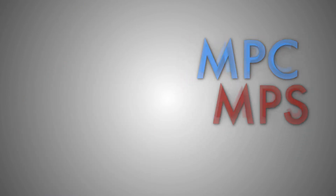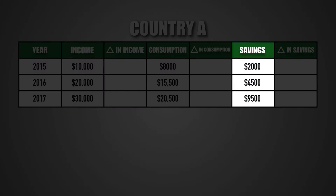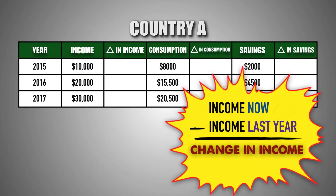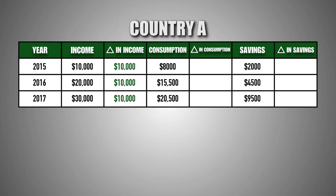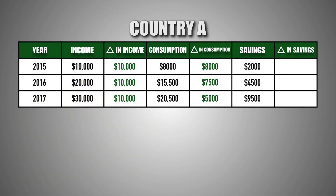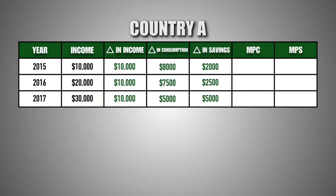This table illustrates the consumption and savings data for Country A between 2015 and 2017. We can see the disposable income levels of consumers in each year, as well as the amount spent on goods and services and the amount saved. First, we determine the change in disposable income by subtracting the previous year's level from the current year. Next, we calculate the difference in consumption as disposable income changed. Lastly, we calculate the difference in savings. Now we're ready to calculate the MPC and MPS for 2015, 2016, and 2017, discovering exactly what portion of each additional dollar consumers spent and saved.